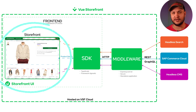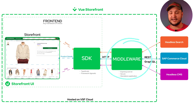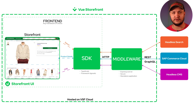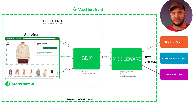StoreFront UI is a UI components library that is used to build your storefronts. SDK is a connector that serves as a bridge between your front-end and middleware. Middleware is a standalone Express.js app that is used to communicate with different third-party headless providers, including SAP Commerce Cloud. VueStoreFront Cloud is a specifically designed hosting platform for your VueStoreFront applications, including VueStoreFront Console — a place to control and monitor all your cloud instances. While StoreFront UI and Cloud are pretty obvious parts of your headless e-commerce application, what about SDK and middleware?